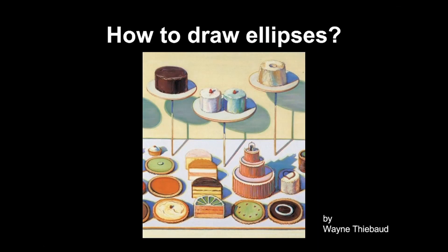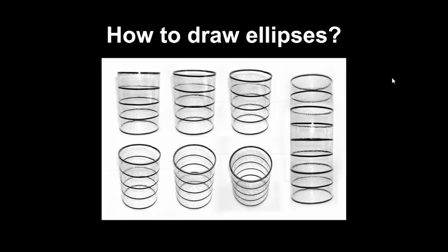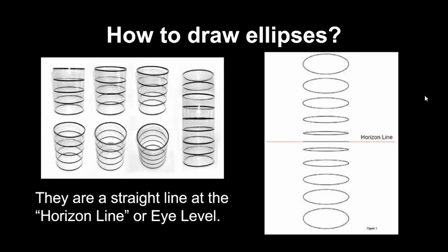Drawing ellipses is also really tough — there's foreshortening happening. If I want to draw the ellipse of this pie at the bottom left and then draw another one up at the top, I'd realize the bottom one is a lot bigger than the one at the top. This is because at eye level we don't see the tops of those objects, but as they go below eye level, we see more of them. They get bigger and bigger as they go down or up from that eye level.